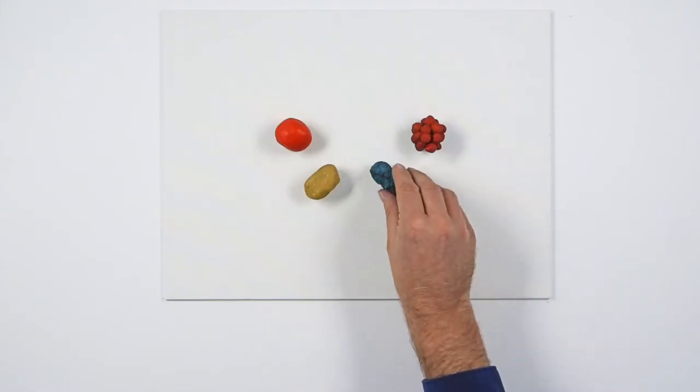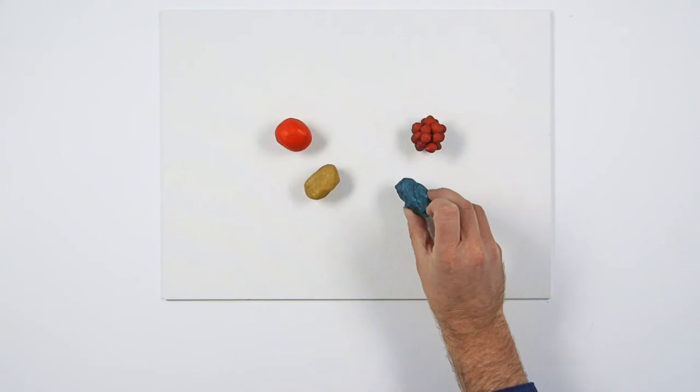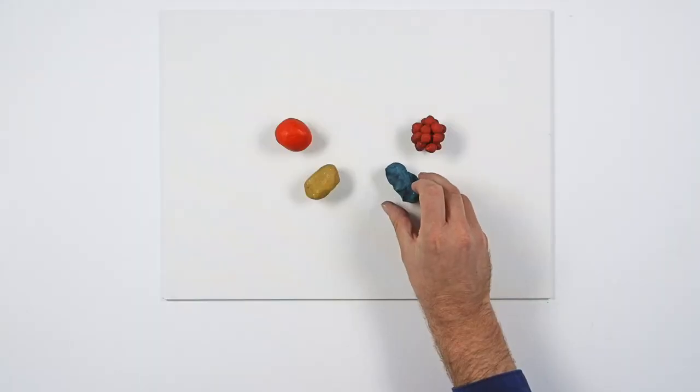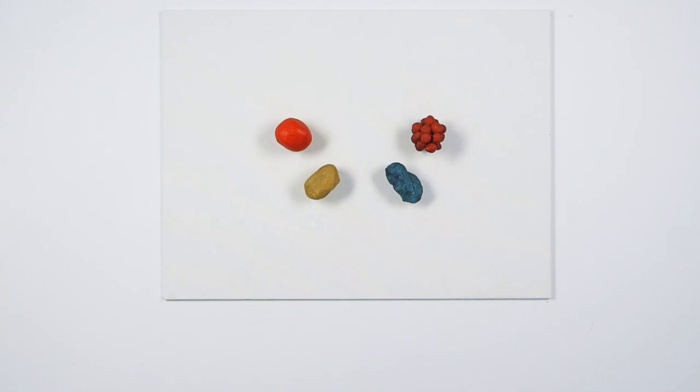But here we have an irregular particle, which although it has a similar size, has a slightly greater surface area to coat, and so will again need a greater quantity of binder to create paint.